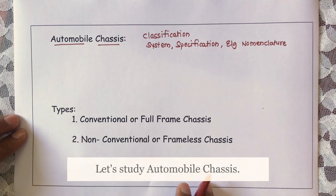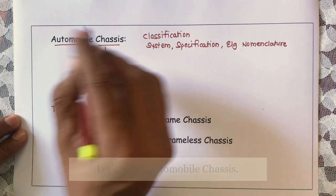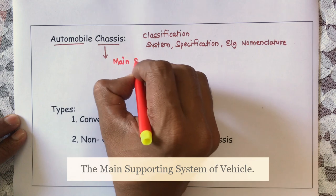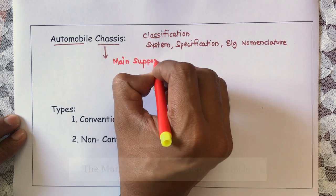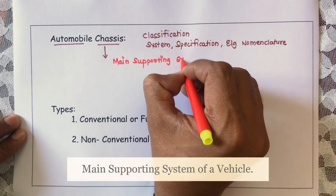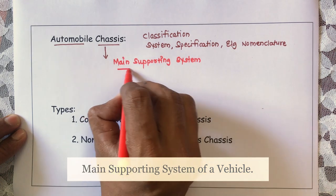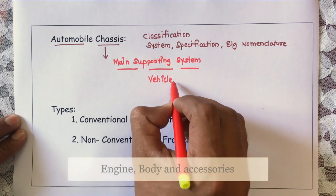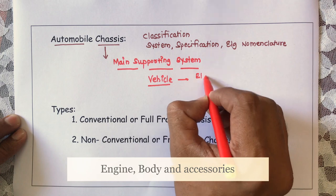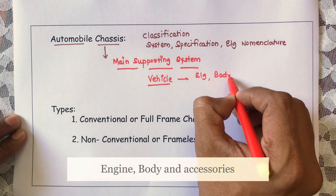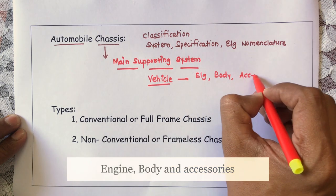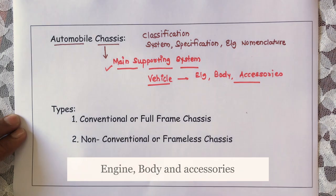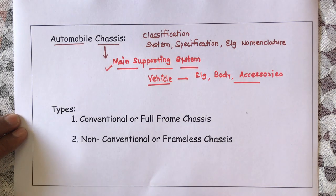Automobile chassis is nothing but the main supporting system of almost all the components of your vehicle. Now, a vehicle may have an engine, a body, and other accessories. To all these components, this is nothing but the main supporting element or system — that is automobile chassis.